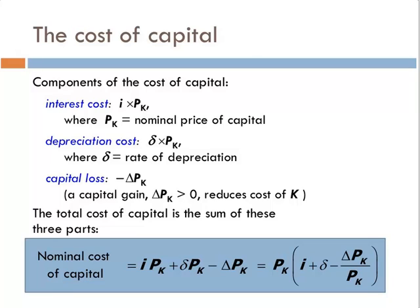So overall, the nominal cost of capital is our interest expense plus our depreciation expense minus our capital loss. If we had a capital gain, that would decrease our costs. If delta pK is positive we have a lower cost, and if it's negative we have a higher cost — that's why there's a negative sign in front of the delta pK term. Factoring pK out, we get the nominal price of capital times the quantity (interest rate plus depreciation rate minus the growth rate of the price of capital).